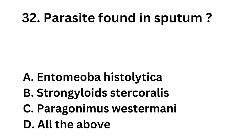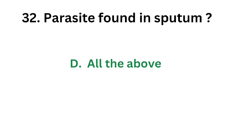Question number 32: Which parasite is found in sputum? Option A: Entamoeba histolytica. Option B: Strongyloides stercoralis. Option C: Paragonimus westermani. Option D: All the above. Paragonimus westermani is the oriental lung fluke, mainly found in sputum. Entamoeba histolytica and Strongyloides stercoralis can invade the respiratory tract and also be found in sputum. The correct answer is Option D: All the above.